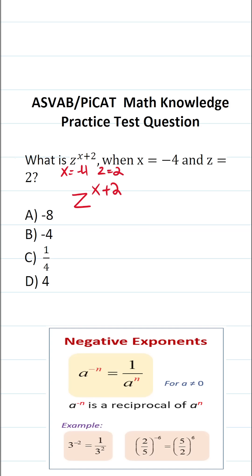In this case, we're going to be evaluating the expression z to the x plus 2 power when x equals negative 4 and z equals 2. So let's go ahead and plug in these values respectively so we can evaluate this expression.